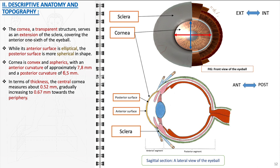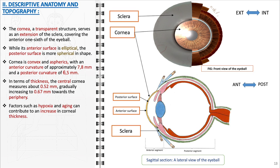Environmental and physiological factors, such as hypoxia, low oxygen conditions, and the natural aging process, can influence corneal thickness. An increase in thickness can impact the cornea's optical properties and may be a sign of underlying health conditions.